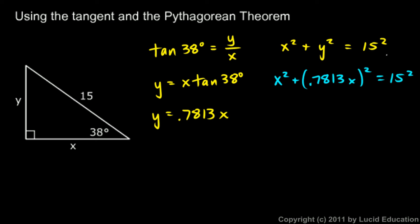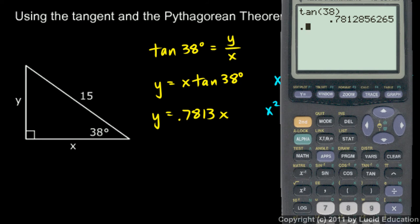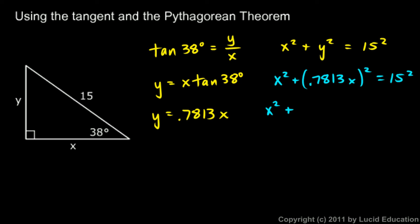Remember, when you square a product, both of those factors get squared. So this becomes x squared plus—and 0.7813 squared, well let's do that. 0.7813 squared gives me 0.6104. So I have x squared plus 0.6104 x squared equals 15 squared.